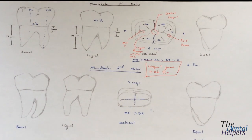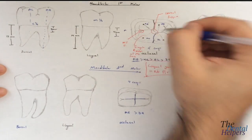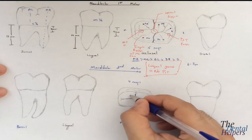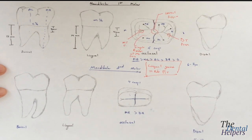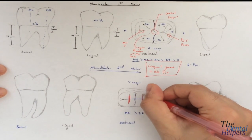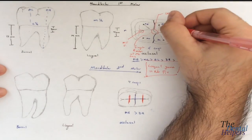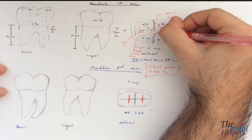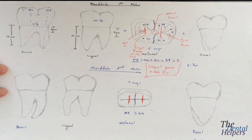In terms of the transverse ridges, we have the mesial buccal and the mesial lingual creating one transverse ridge. With the distal cusp, we'll have another transverse ridge. So the same thing is seen on both of these teeth.